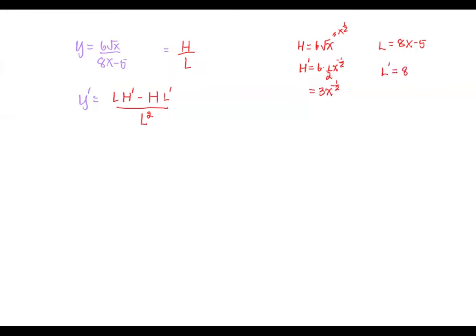Now we have all the components — the high, low, d-high, and d-low — and we bring them back to the quotient rule formula.